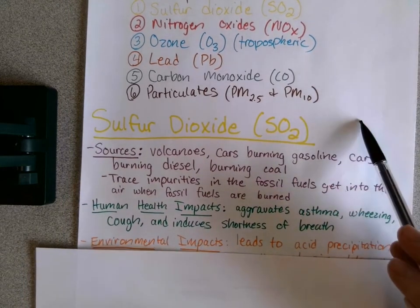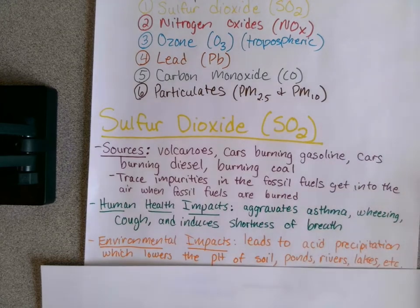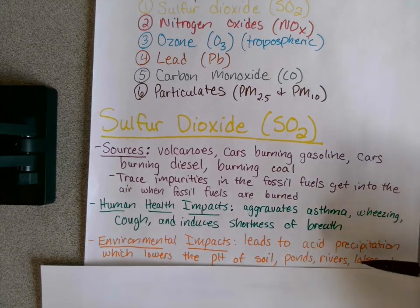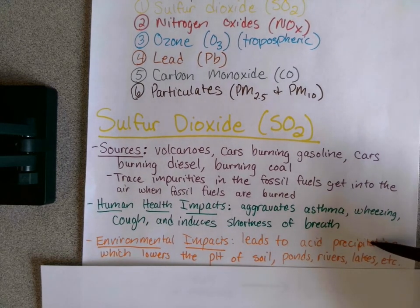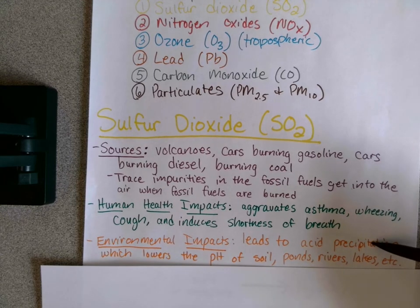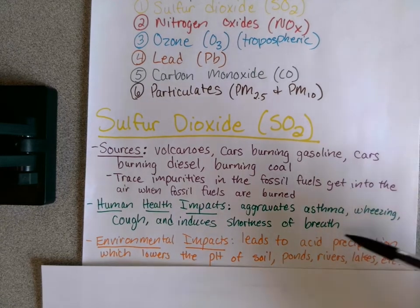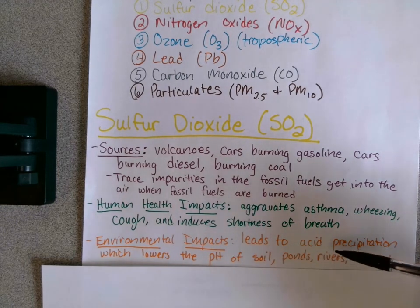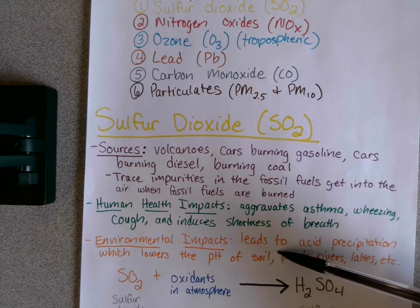For environmental impacts, SO2 leads to acid precipitation — which can include acid rain, acid fog, and acid snow. Acid precipitation lowers the pH of soil, ponds, rivers, lakes, and streams. The SO2 gets oxidized in the atmosphere, mixes with hydrogen and other compounds, and becomes H2SO4 — sulfuric acid.